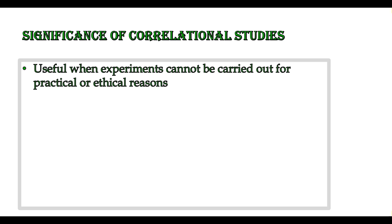What are the significance of correlational studies? One situation is where we cannot conduct experiments, or it is very difficult to do so — because it is expensive, not practical, data is difficult to obtain, or because of ethical reasons. In such situations, we can find the correlation between two variables instead.